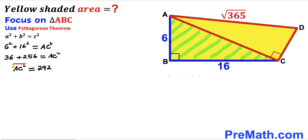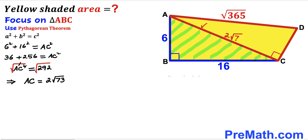We undo the square by taking the square root on both sides. The square and square root cancel each other, so our side length AC turns out to be 2√73 units.